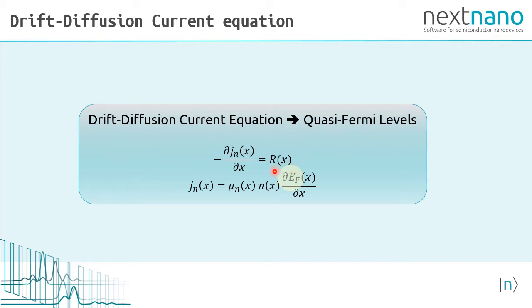The current equations calculate the quasi Fermi levels as a function of position. We have a recombination term and a current density. And the current density is proportional to the mobility and the electron density and the gradient of the quasi Fermi level. We have the same equation also for the holes.